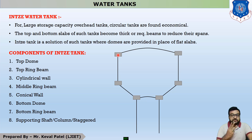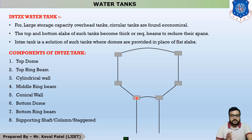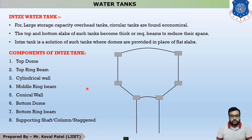There are three ring beams in the whole Intze type water tank. The first is called the top ring beam, the second is the middle ring beam, and the third is the bottom ring beam. After that, there is a circular cylinder portion — the wall of the circular cylinder is called the cylindrical wall. The wall of the conical portion is called the conical wall.